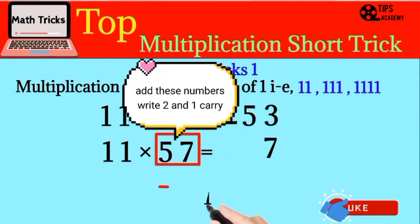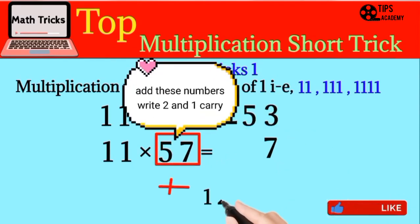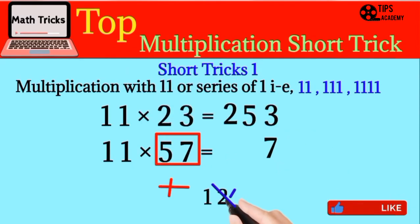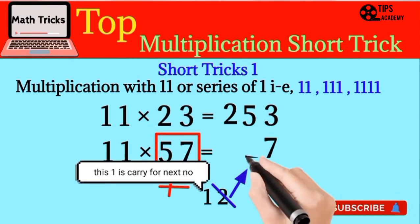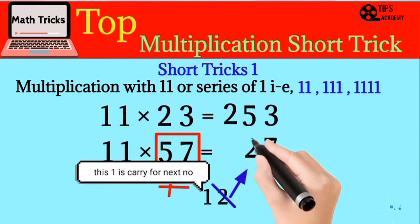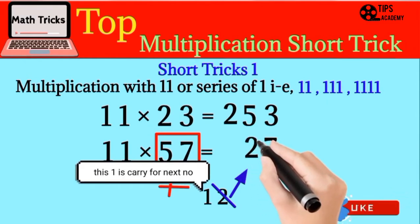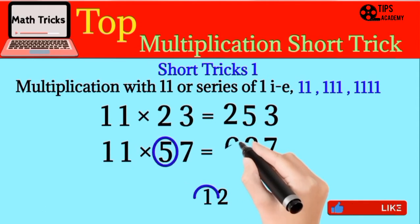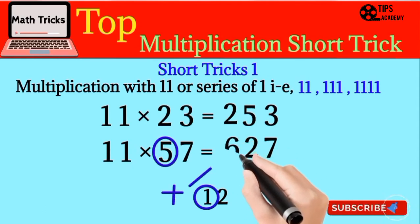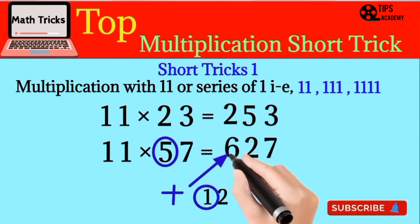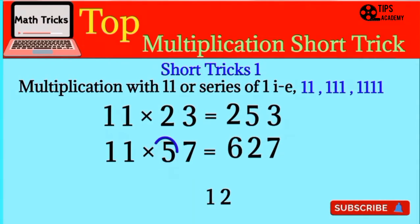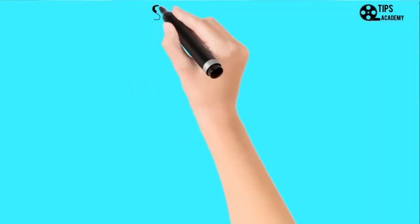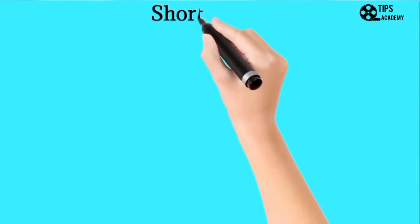We add 5 and 7; the result will be 12. We will write 2 as it is and 1 will be carry for the next number. We then add 5 and the carry 1; the result will be 6. So that's the answer for 11 × 57.